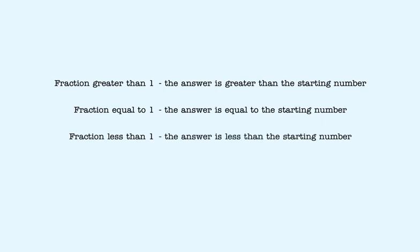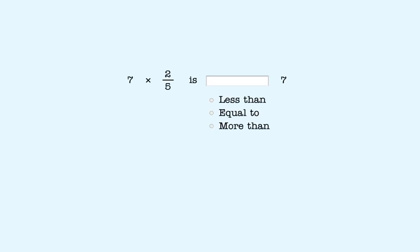In the remainder of this lesson, you'll be asked to predict the outcome when a number is multiplied by a fraction. You don't have to do the multiplication. Just determine what will happen. Now, you try a few. For each question, click on the correct button. In this example, the correct answer is less than. The answer is less than the starting number. The fraction you multiply by is less than 1, so the answer is less than the starting number.